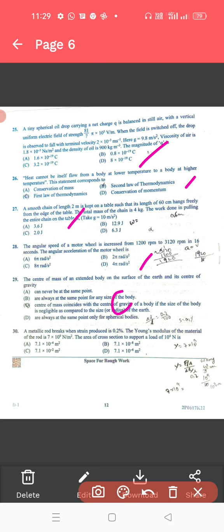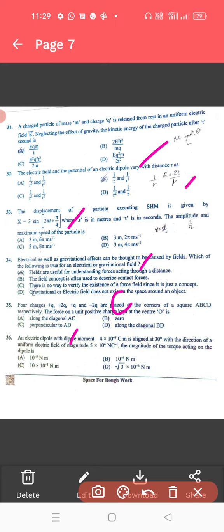For 30, a metallic, for that 7.1 into 10 power minus 4 meter square. Okay. So, let us move to the 31st.